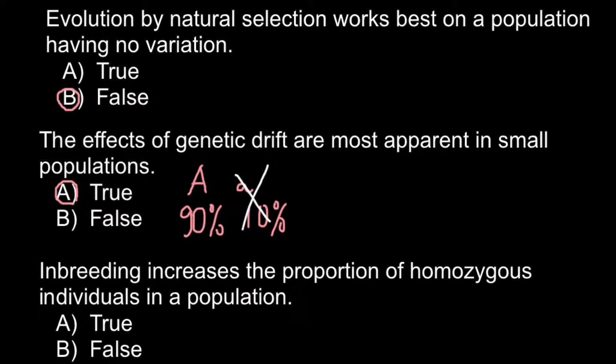But imagine that this population would be, for example, 10,000 individuals. And that means this 10%, or one individual, would represent 1,000 individuals. So if there is no selection against this genotype,